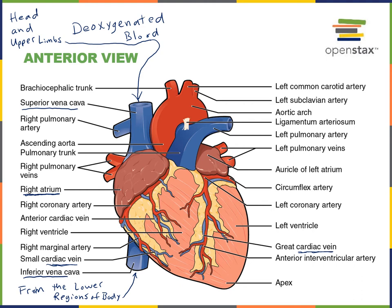Blood from the right atrium then moves down into the right ventricle. The right ventricle receives the deoxygenated blood from the right atrium and pumps it out into the artery known as the pulmonary trunk. The pulmonary trunk then branches into the left pulmonary artery, which carries blood to the left lung, and the right pulmonary artery, which carries blood to the right lung.